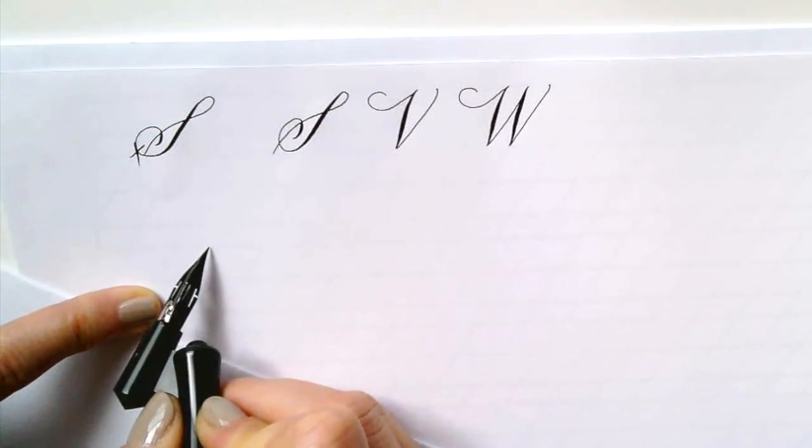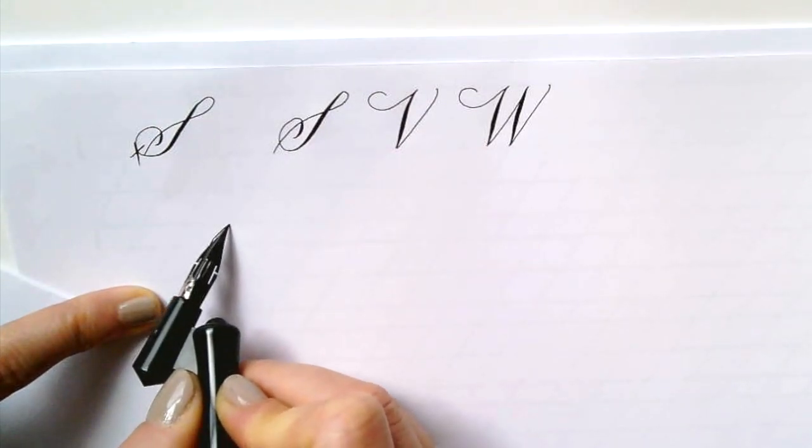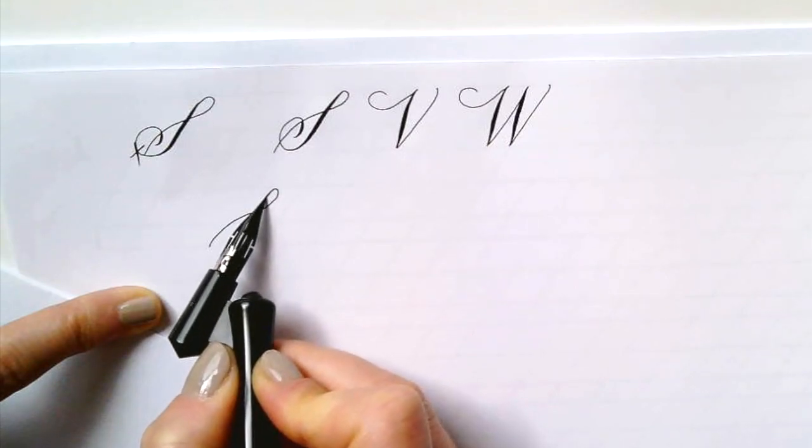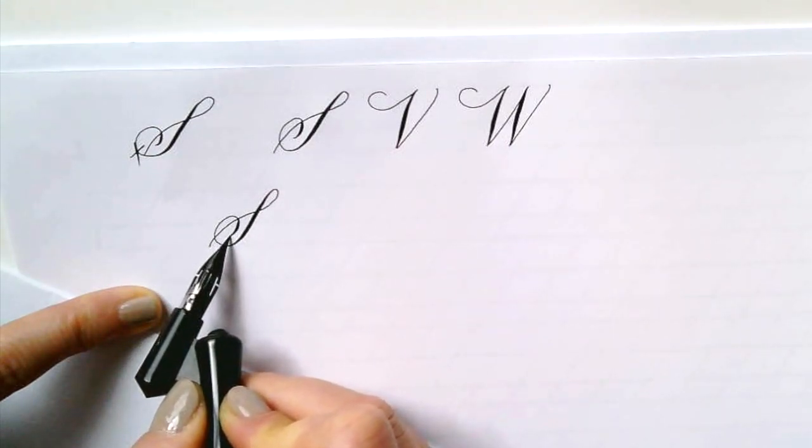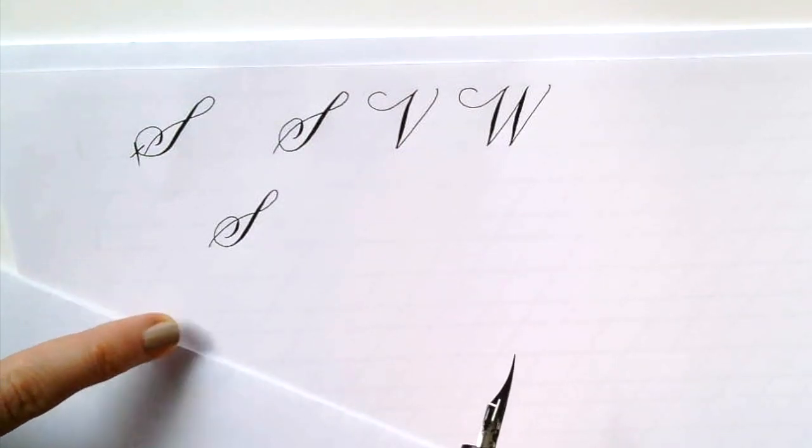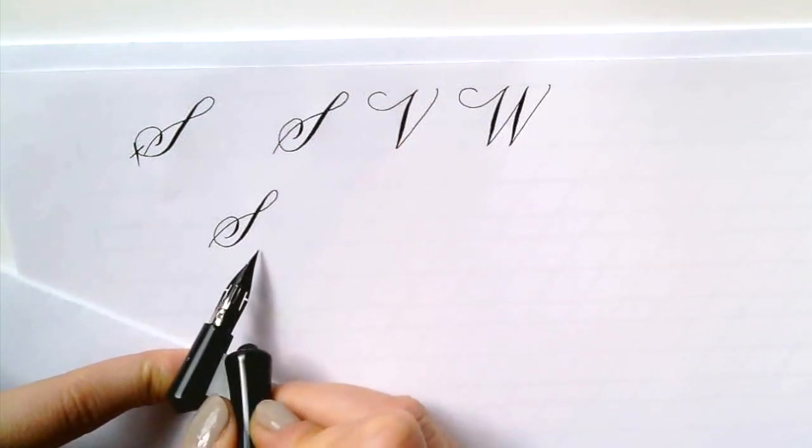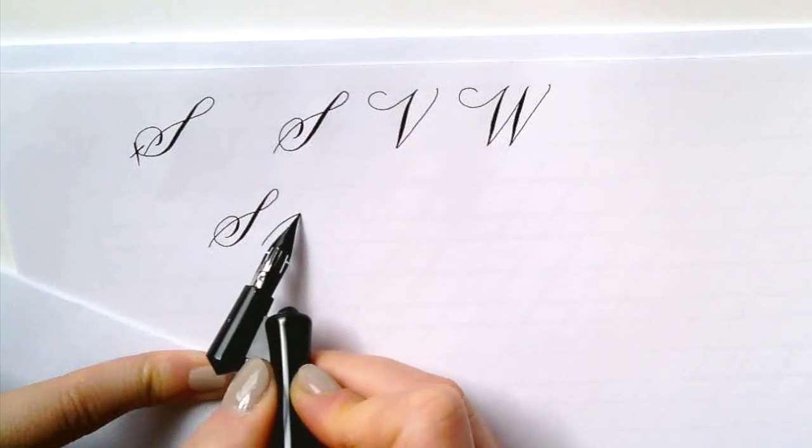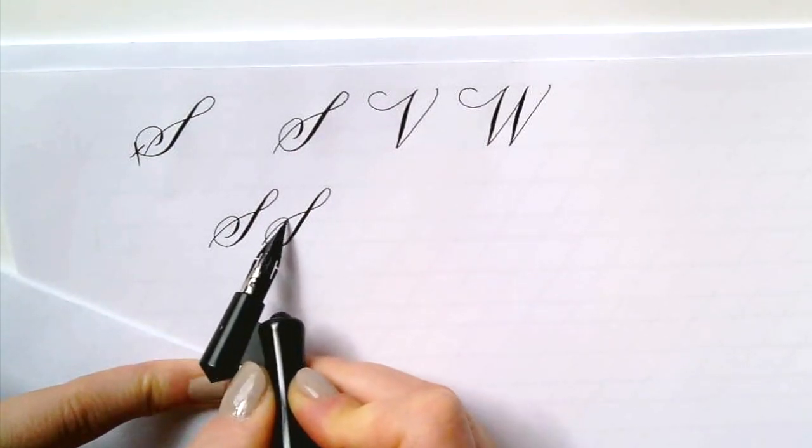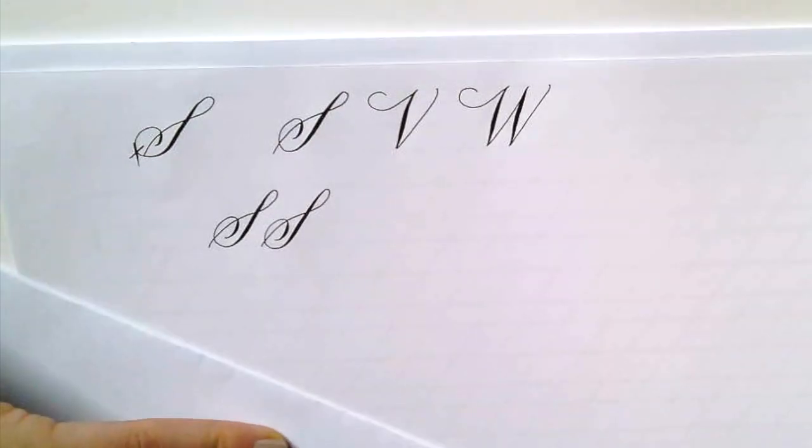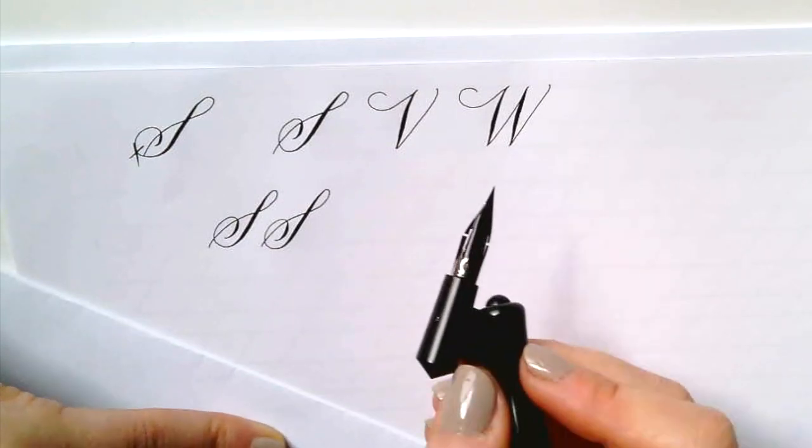This next group we're going to start at the baseline for the S and swoop over and have a small loop and the dynamic stem and come around and circle it nicely. There are various ways of building the S but this is the one I like and you want to make sure that the entrance stroke is to the left of that bowl that you're ending with.